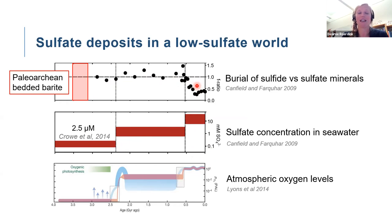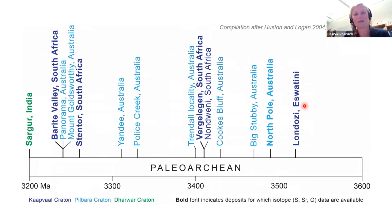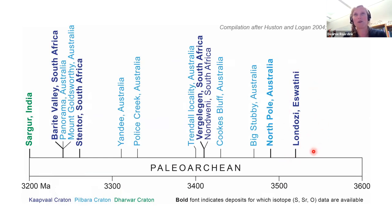The Paleoarchaean is a remarkable exception, as we find large bedded barite deposits in this period. Even more remarkable is that these deposits occur across three different cratons — the Kaapvaal, Pilbara, and Dharwar cratons. The oldest known deposit is the 3.52 Ga Londozi deposit in the Barberton Greenstone Belt, and the youngest is the Sargur barite at 3.2 billion years old in western India.